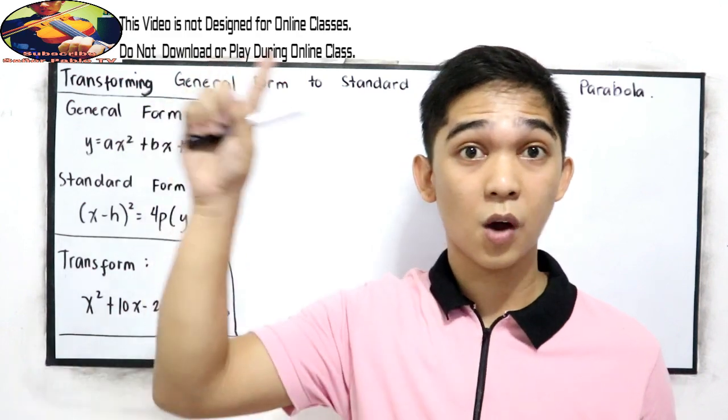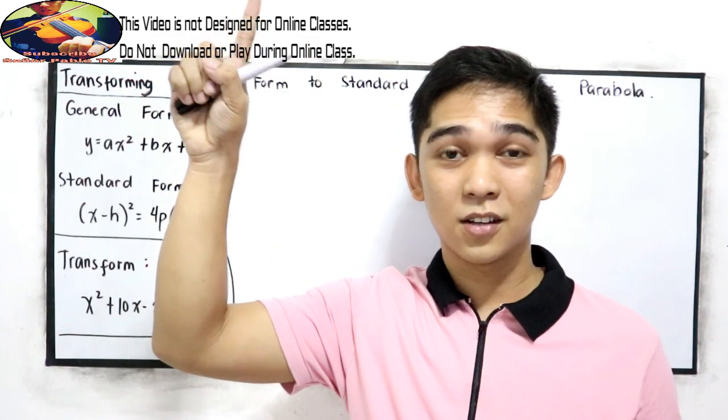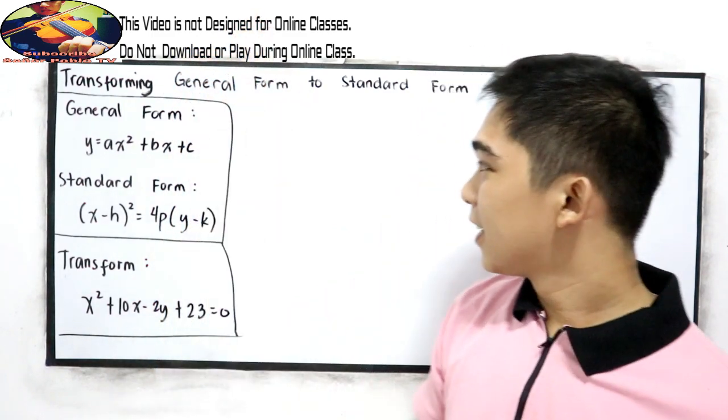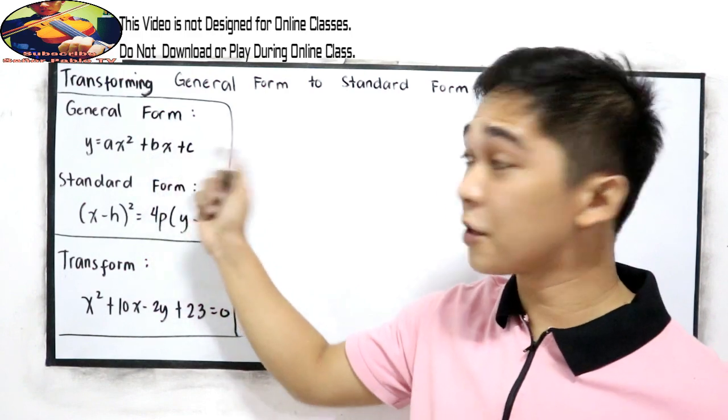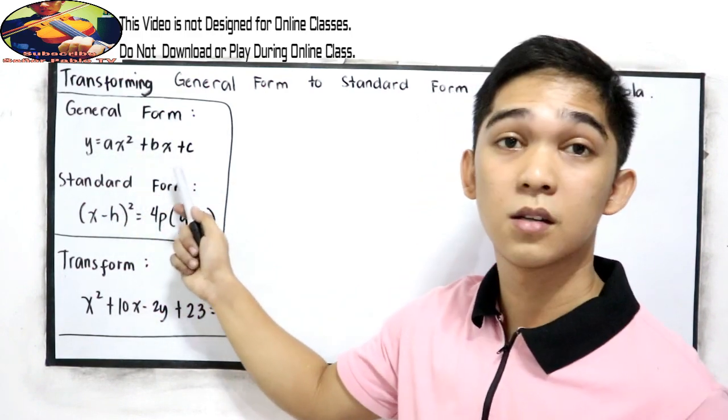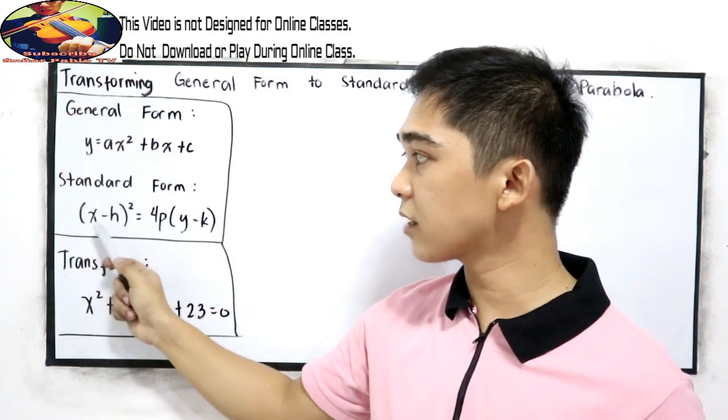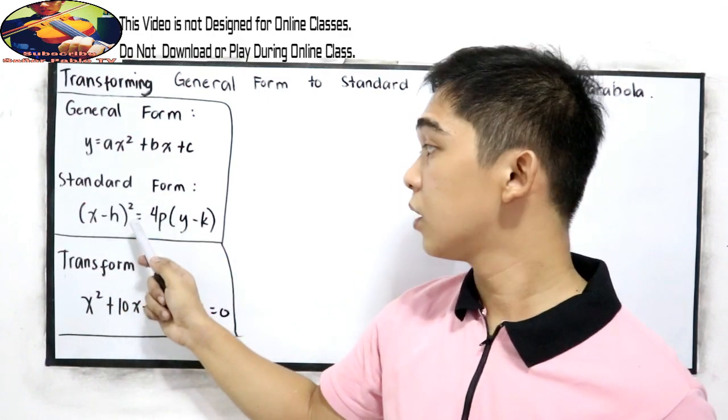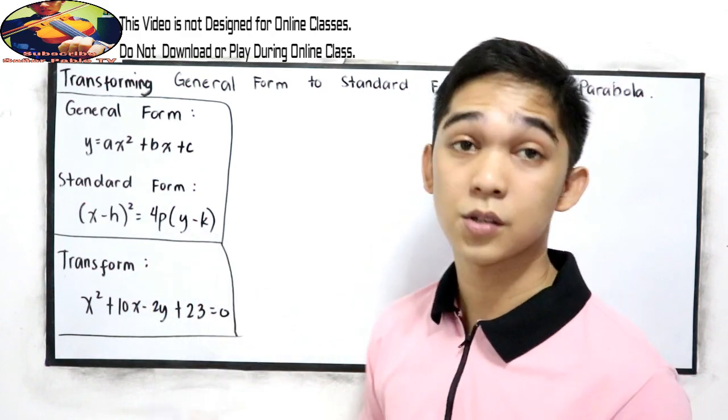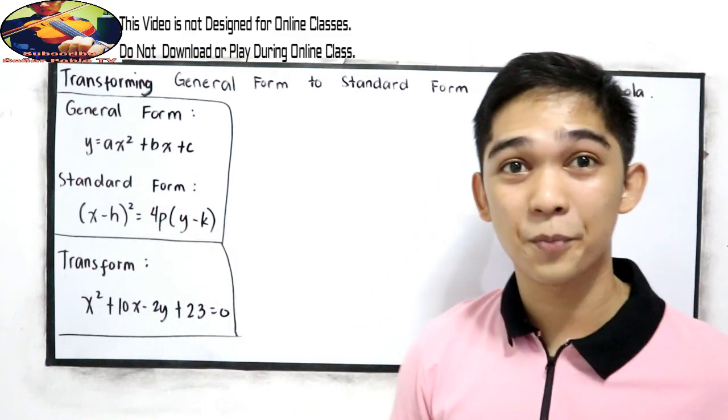If you haven't watched the video please go to our playlist or just click the card so it will direct you to that video. The general form of the parabola is y equals ax squared plus bx plus c while the standard form is quantity x minus h raised to 2 equals 4p quantity y minus k. We're going to transform into standard form.